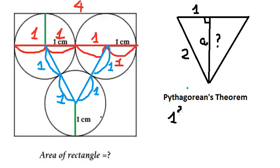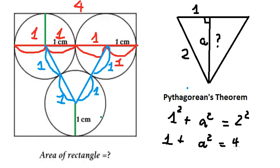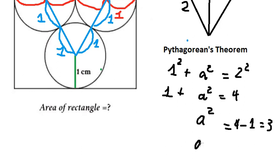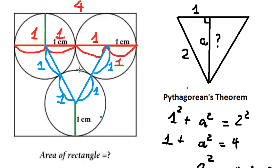So we have one squared plus a squared equals two squared. This gives us one plus a squared equals four. Moving number one to the right, we have a squared equals three. Taking the square root of both sides, we have a equals the square root of three.